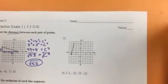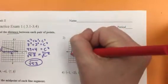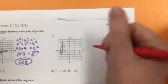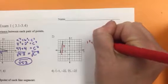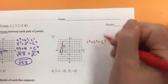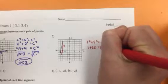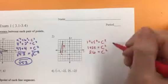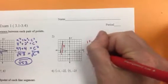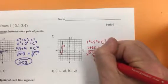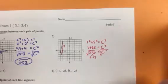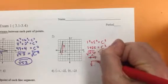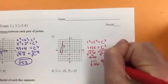On number 2, I count how far over — 1, up 1, 2, 3, 4, 5. Plug those in: 1 squared plus 5 squared equals c squared. 1 plus 25 equals c squared. That's 26 equals c squared. Square root to get rid of the power. 26 breaks down to 2 times 13 — there are no doubles, so I cannot take it out. So the distance is the square root of 26.